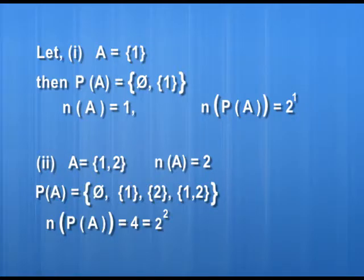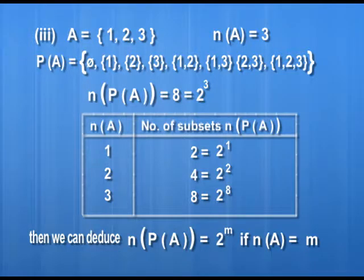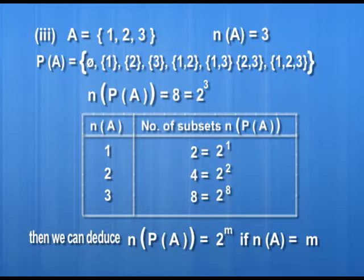Listing this information in a table, we find the relation: the number of elements in the power set equals 2 raised to the power m, where m is the number of elements in set A.